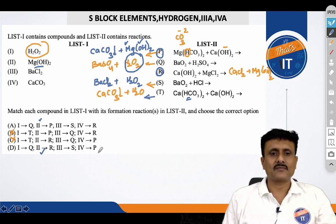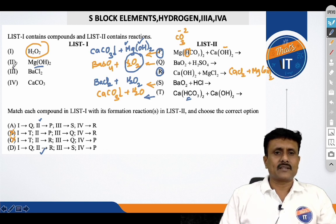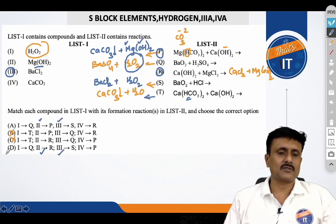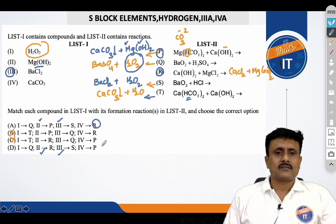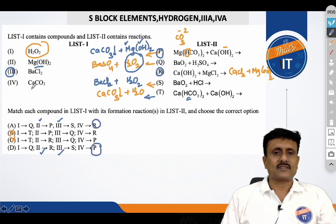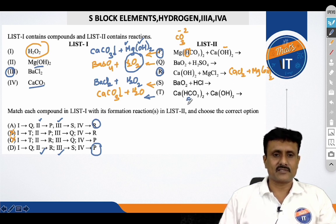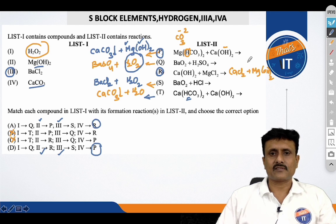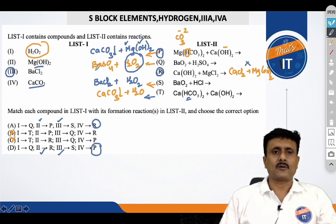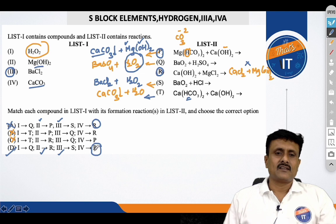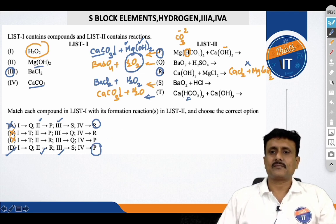You have to move on to the third. You can see third is barium chloride. Barium chloride is obtained in S. In both the options, it is given as S. So, you cannot come to the conclusion. So, everything has to be determined with this fourth compound that is calcium carbonate. You can see calcium carbonate is formed at which reaction? You can see that you have obtained in P. So, right answer for this question is just based on the fourth compound matching is option D.